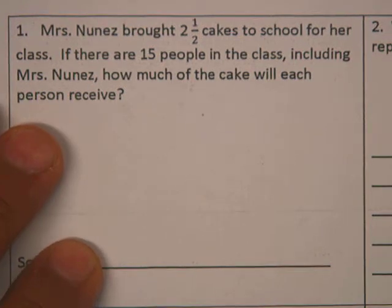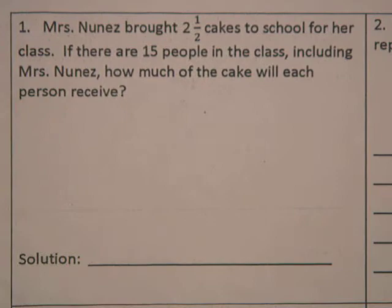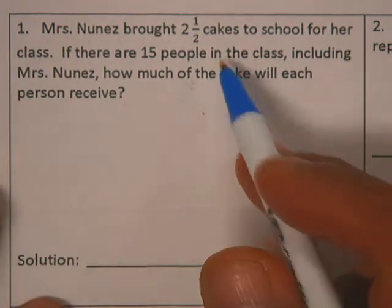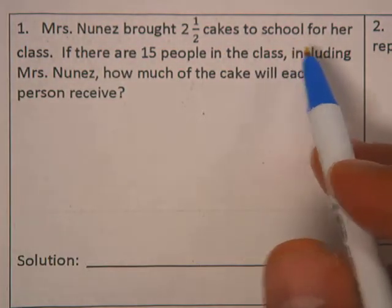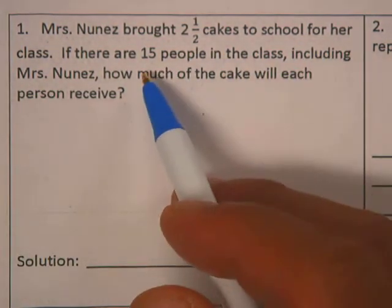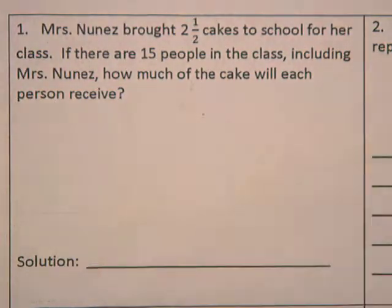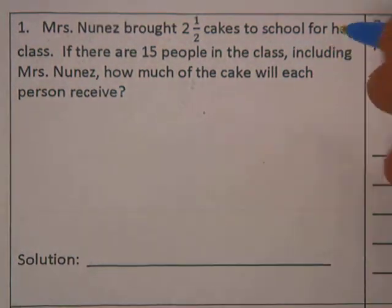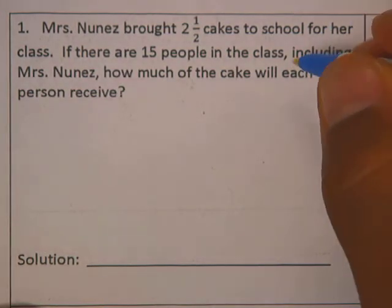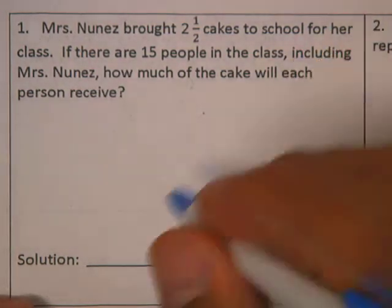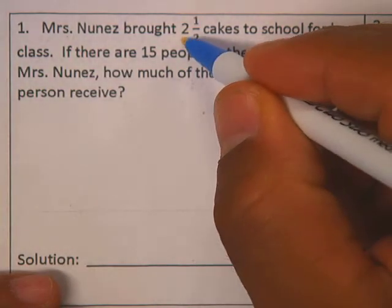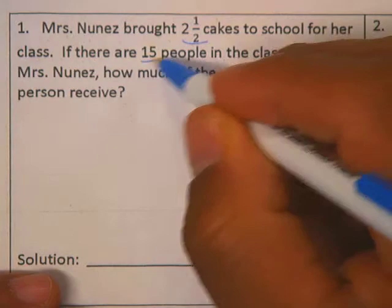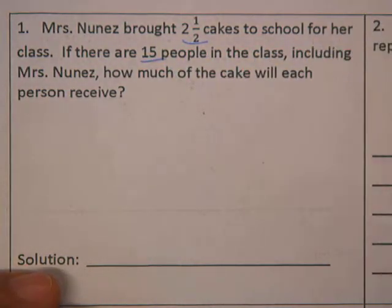Alright, let's look at number one in the homework. It says that Ms. Juniors bought two and a half cakes to school for her class, but there are 15 people in the class. Including Ms. Juniors, how much of the cake will each person receive? So she's bringing two and a half cakes for 15 people.